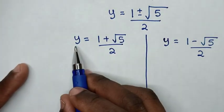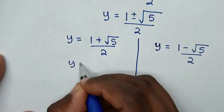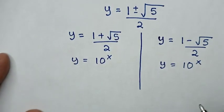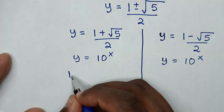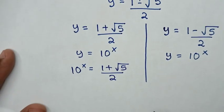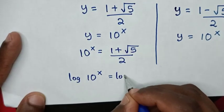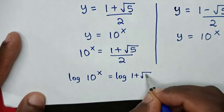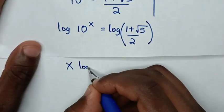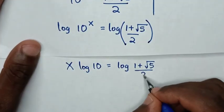From the first solution — recalling that y = 10^x — we compare: 10^x = (1 + √5) / 2. We apply log to both sides, giving log(10^x) = log((1 + √5) / 2). The power of x moves to the front: x·log(10) = log((1 + √5) / 2).